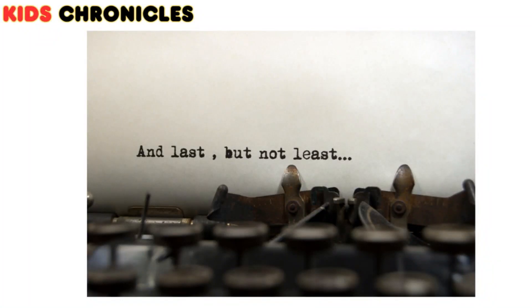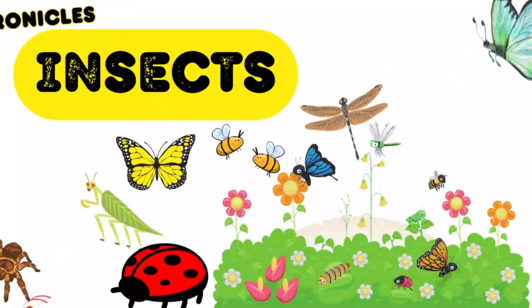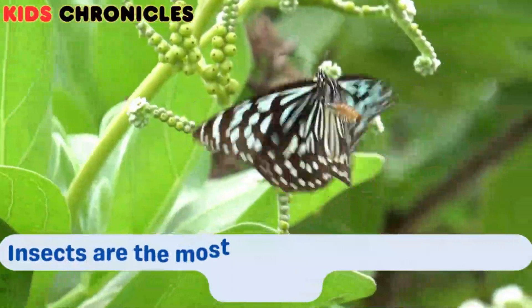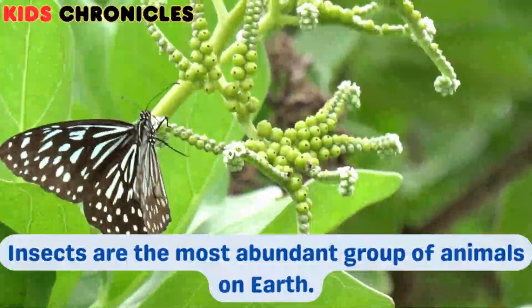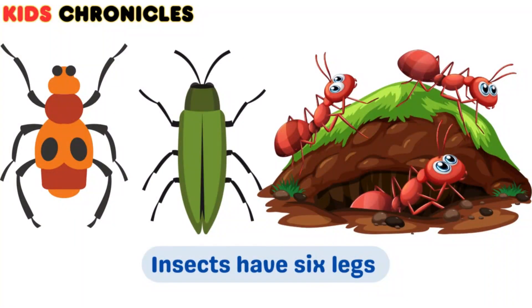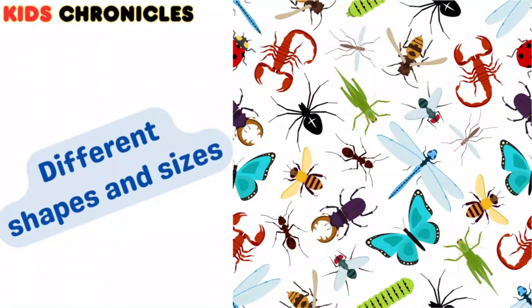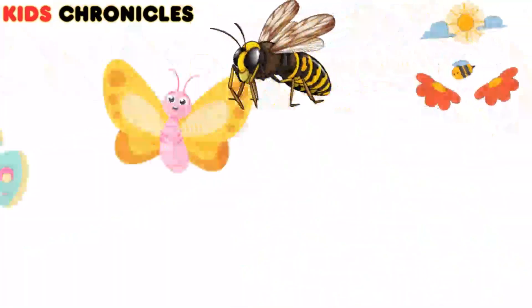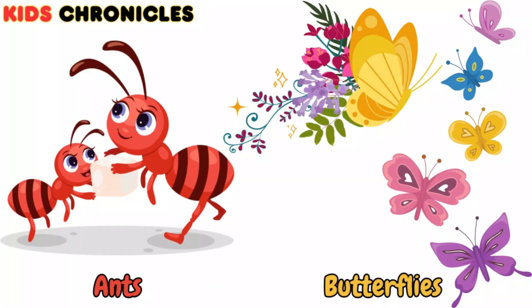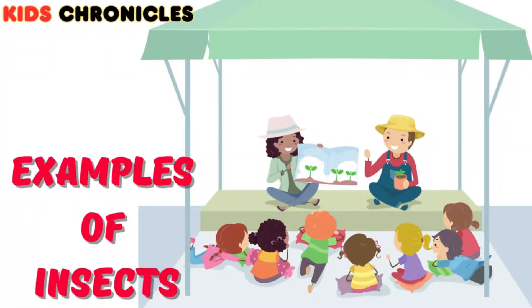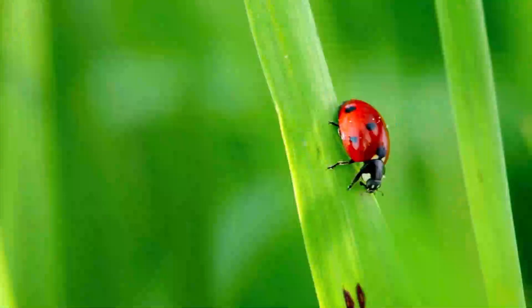Last but not least, we have insects. Insects are the most abundant group of animals on Earth. They have six legs and three main body parts: head, thorax, and abdomen, and come in many different shapes and sizes. They often have wings. From busy ants to beautiful butterflies, insects can be found almost everywhere you look. Examples of insects include butterflies and ladybugs.